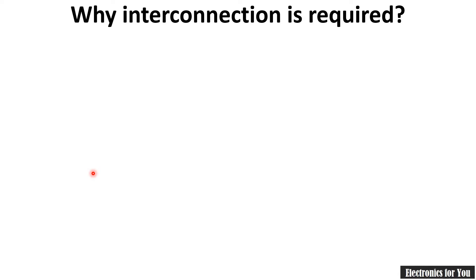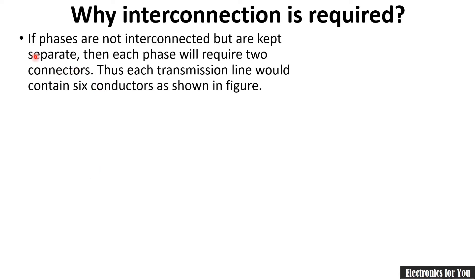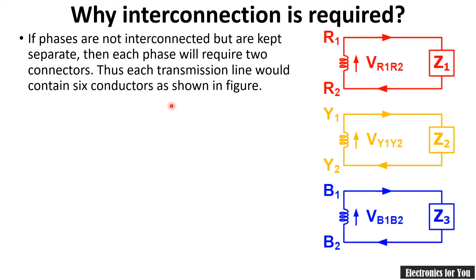The reason behind interconnection is that if phases are not interconnected but are kept separate, then each phase will require two conductors — one for phase and another for neutral — to complete the circuit. Therefore in such a case we will require six different conductors for three-phase wiring. For example, for a red phase we require two different wires: one for power supply and another to complete the circuit.